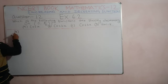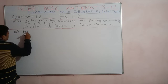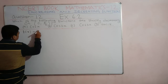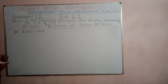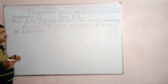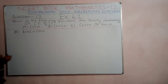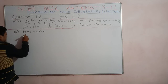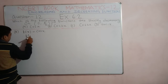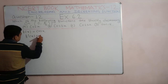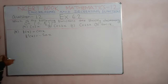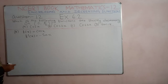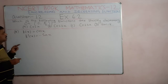Let's see each function one by one. For part (a), f(x) = cos x. To find whether the function is increasing or decreasing, we find the derivative — the slope of the function. The derivative f'(x) is equal to minus sin x.